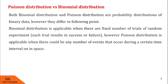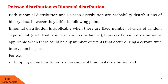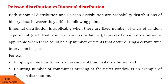However, Poisson distribution is applicable when there could be any number of events that can occur during a certain time interval or in space. For example, flipping a coin 4 times is an example of binomial distribution, because here the number of trials are fixed. Whereas, counting the number of commuters arriving at the ticket window is an example of Poisson distribution, because you will never know how many commuters will arrive at the ticket window in an hour.